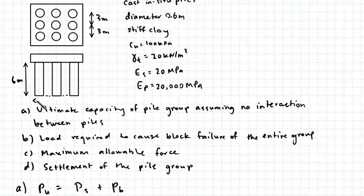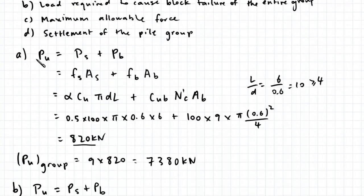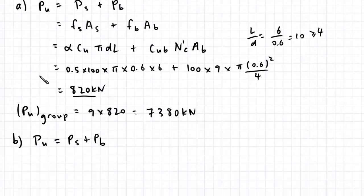This horizontal distance, I'll call B, equals the spacing between each pile from center to center, so 3 plus 3 plus half the pile diameter on each side, which adds 0.6. So B equals 2 times 3 plus 0.6, giving us 6.6 meters.